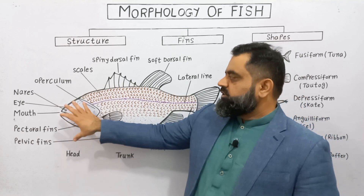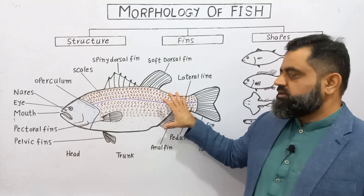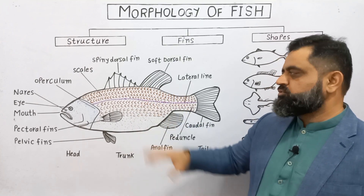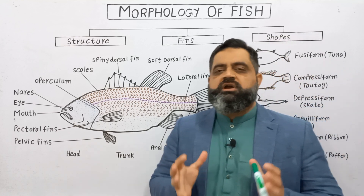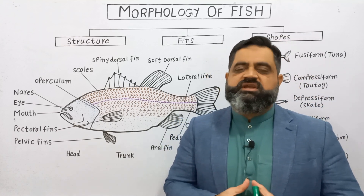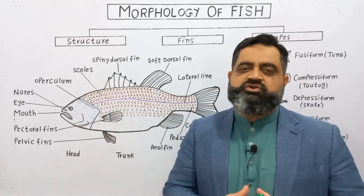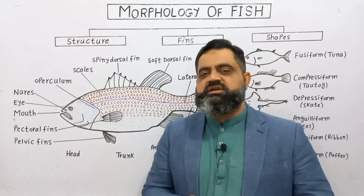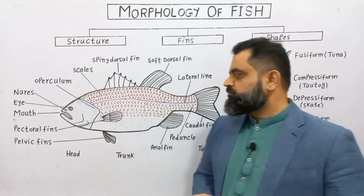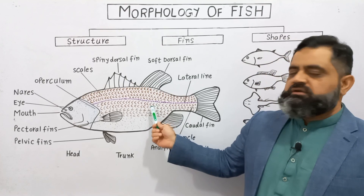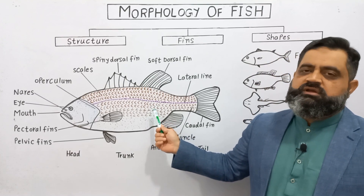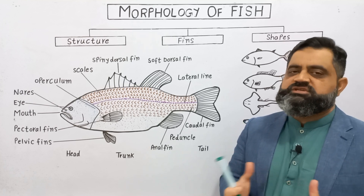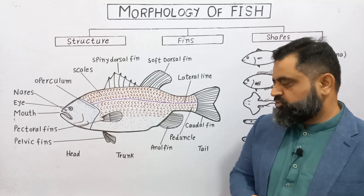Just behind the head is the main body part known as the trunk. This trunk is usually covered by scales. There are different types of scales present on different species of fish, which we will discuss in an upcoming lecture. Some fish are scaleless and do not have scales on the body, but other fishes usually have scales all over their body.